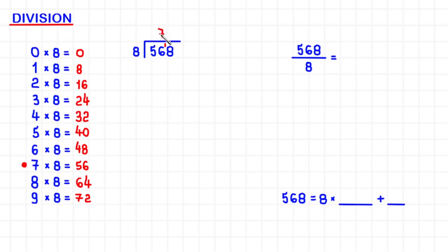I write 7 here. 7 times 8 is 56, I write it here, and then I subtract. It's a pretty simple subtraction, because 56 minus itself will give us 0 as a result.